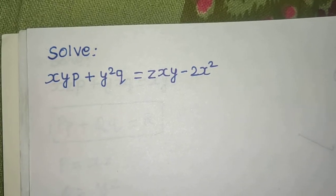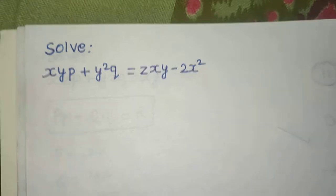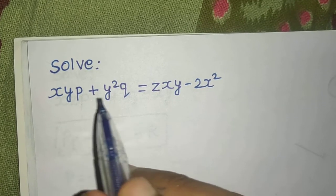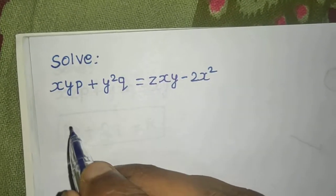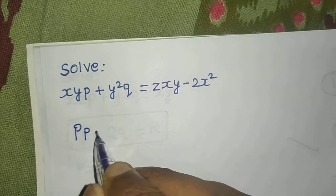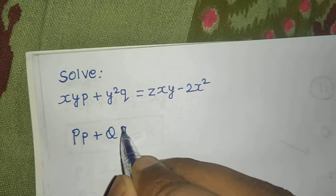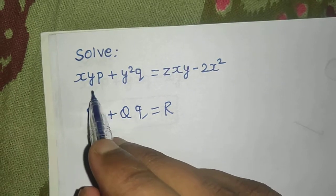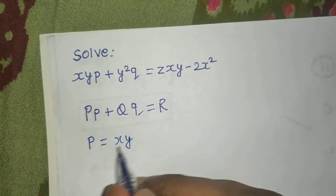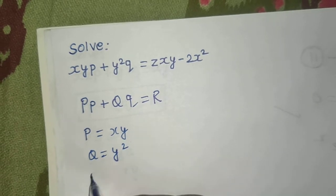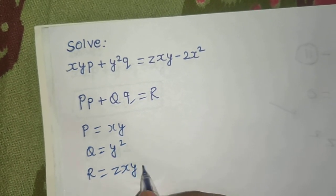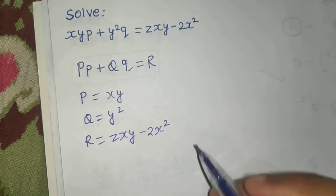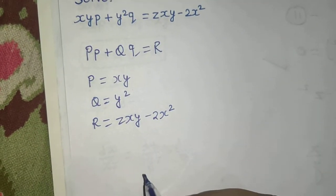Let's look at a question from linear partial differential equations of first order. This is clearly of the format capital P times small p plus capital Q times small q equals R. Here P is the coefficient of small p, which is xy. Similarly, Q is y squared, and R is zxy minus 2x. This was the first step: identify your P, Q, and R. The second step is to write the auxiliary equation.